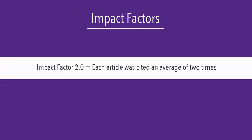Therefore, an impact factor of 2.0 indicates that, on average, articles published in the journal in 2012 and 2013 were cited two times. The five-year impact factor is the same, except that it accounts for five years rather than just two.